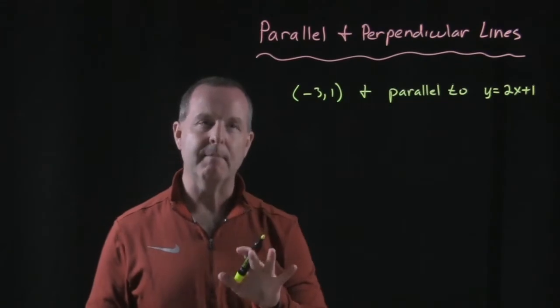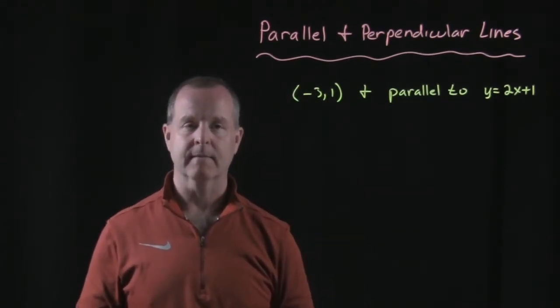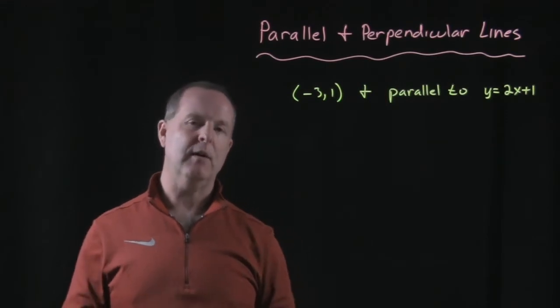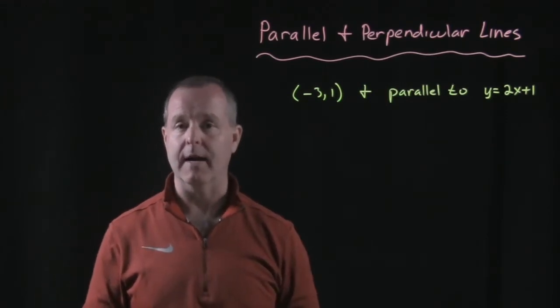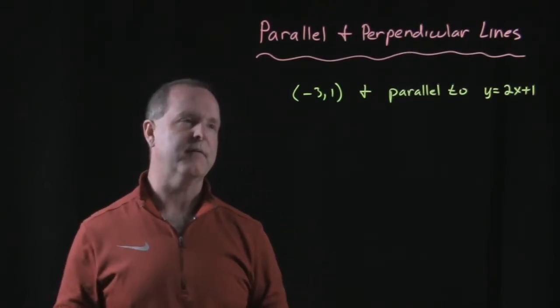Now we're going to use what we remembered about the slopes of parallel and perpendicular lines. So what do you remember about parallel lines or their slopes? They were the same. And perpendiculars were negative reciprocals of each other.